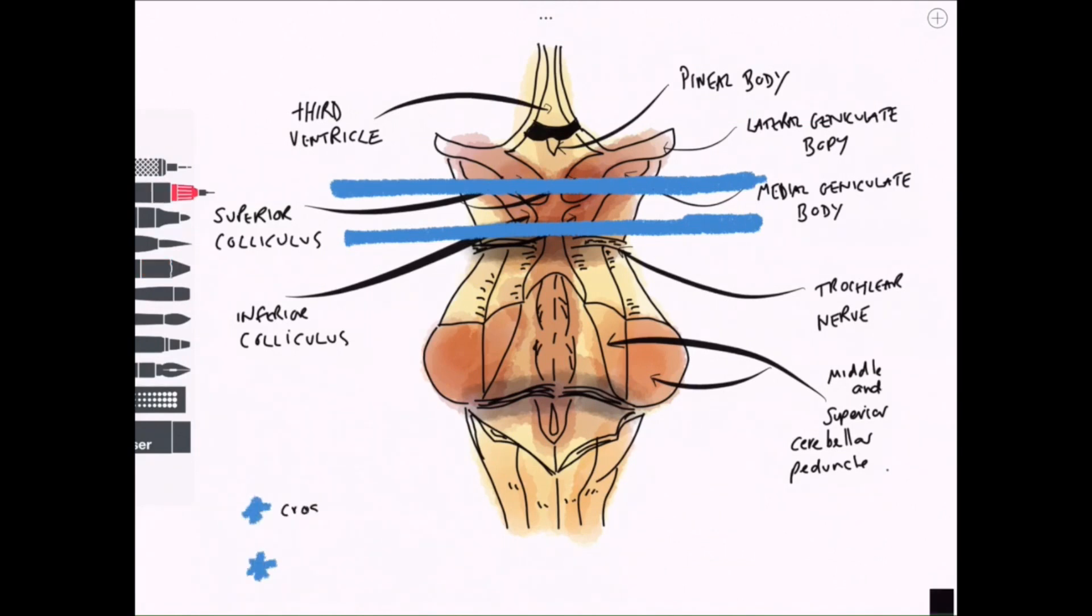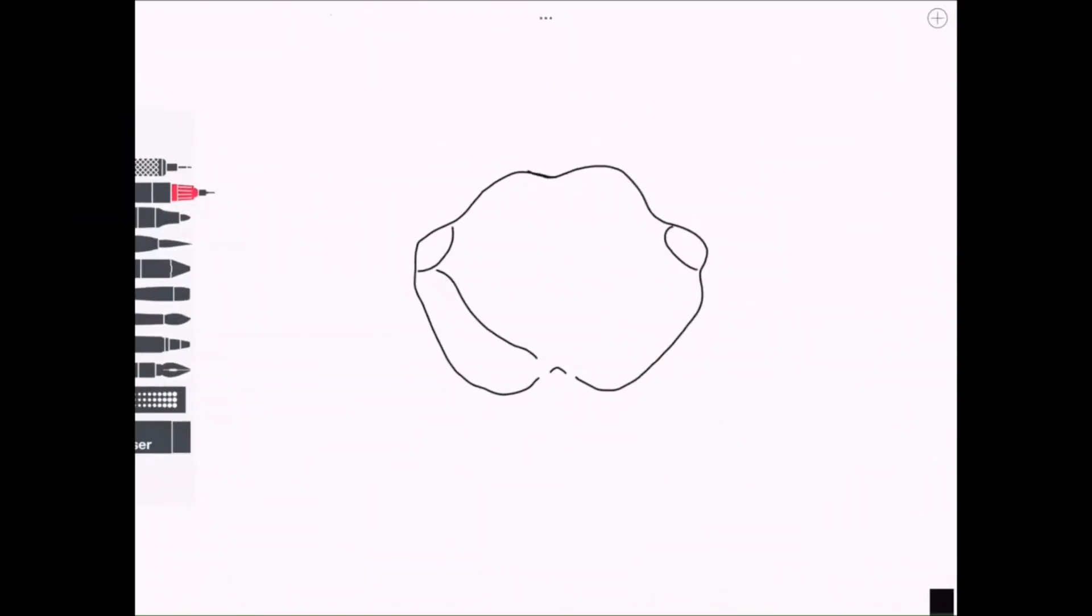So these are structures associated with the tectospinal tract and associated with the extrapyramidal pathway involved in reflexes to bright lights and loud noises. But they do have some interesting anatomy in the sense that they stick out of the posterior surface. They're quite useful landmarks.